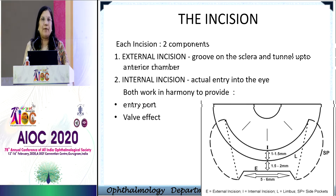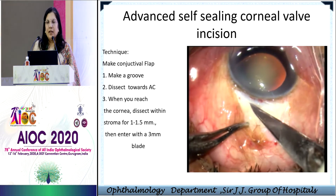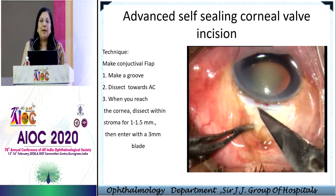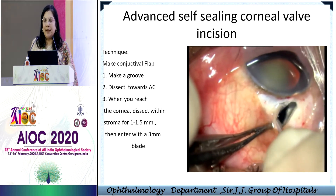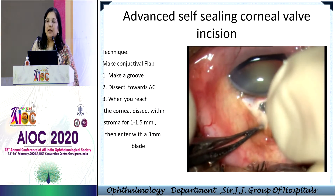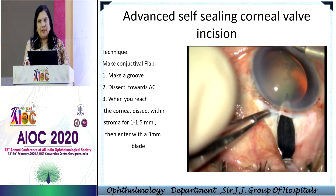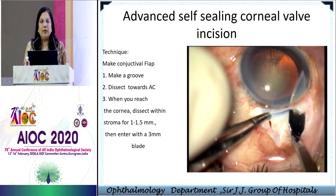They work together in harmony to provide the entry port and also a valvular effect. As you can see, this is a diagrammatic representation — this is the external incision, and because of the large internal incision, you can deliver nuclei which are large through a small external incision. This is the external groove made after making a conjunctival flap. The conjunctival flap itself is very important because it has to seal completely so that the patient doesn't feel any pain. With a 2.6 knife, the tunnel is dissected. Dissection is not cutting; it is separating the layers of the sclera so that you are in half to two-thirds thickness of the sclera. This is the entry into the anterior chamber with a 3.2 keratome, then cutting while going in to make the actual incision — so this is totally the triplanar incision.